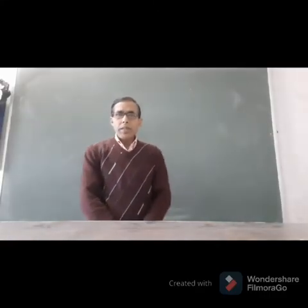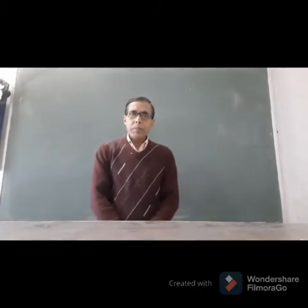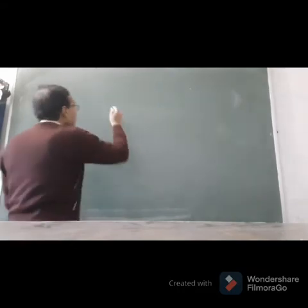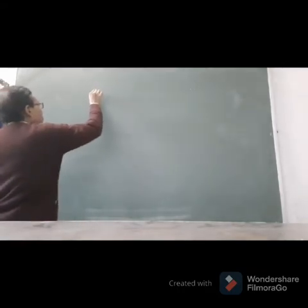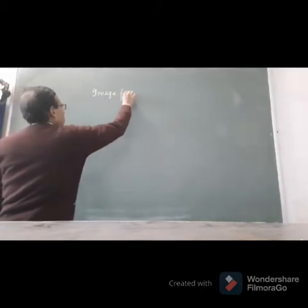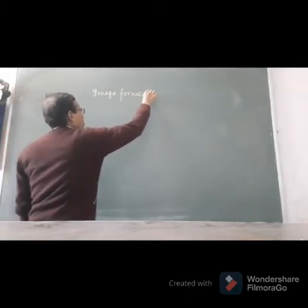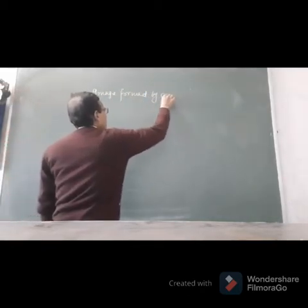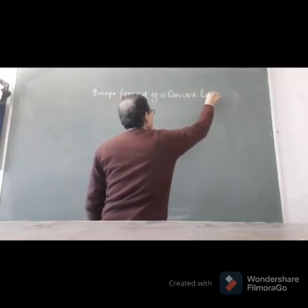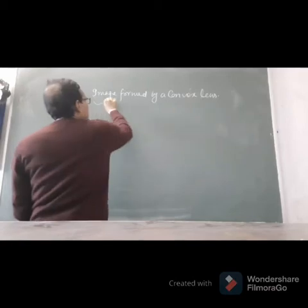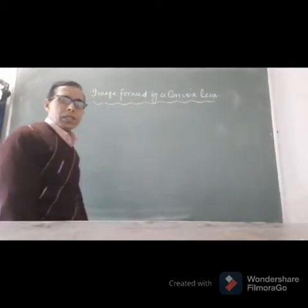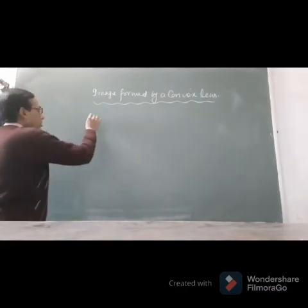Hello students. Today we are going to discuss the topic: images formed by a convex lens. There are six positions of image formation in a convex lens.